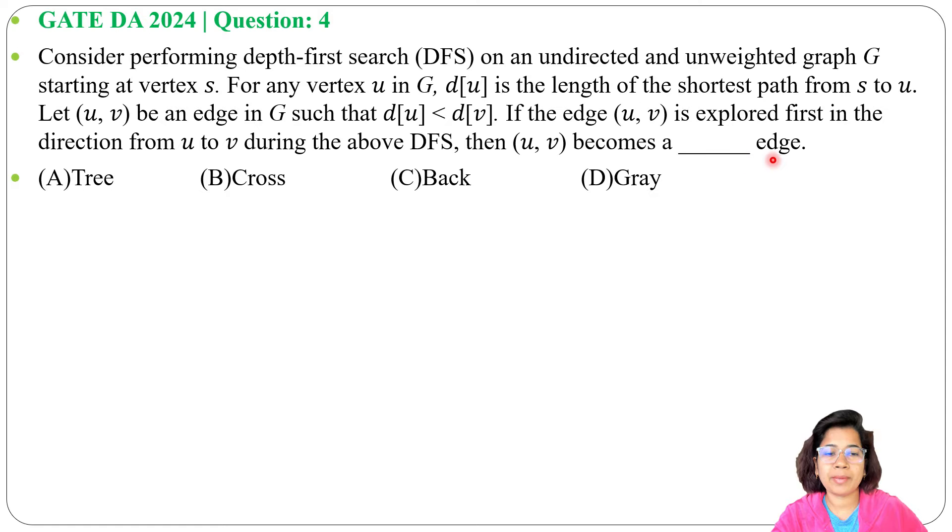Four options are given. So in the question it is saying we have an undirected and unweighted graph G. Starting vertex is S and there are two vertices U and V such that d[u] is less than d[v].